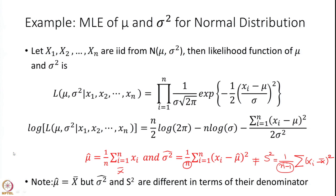Let us take the next example. So far I have given examples where you very nicely get a closed-form solution for the maximum likelihood estimator. Well, these are the lucky cases — this does not happen all the time. Here I would like to show you the case of the two-parameter Weibull distribution, in which we will end up with equations that we need to solve iteratively to find the maximum likelihood estimator.